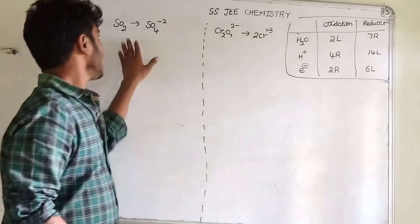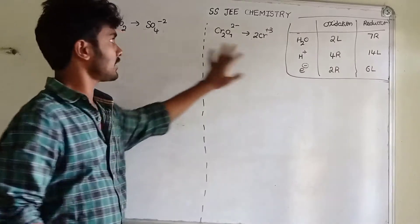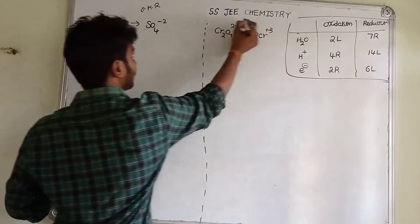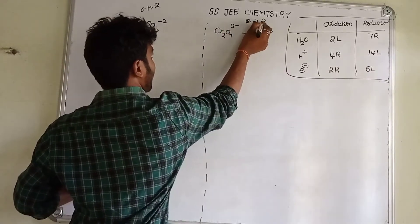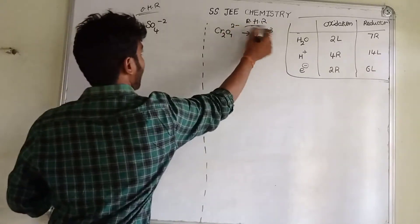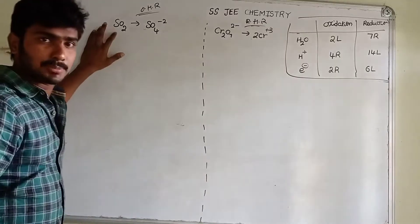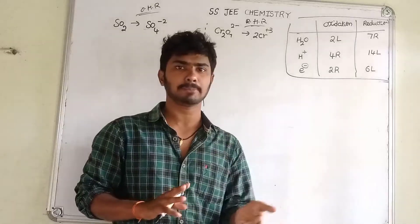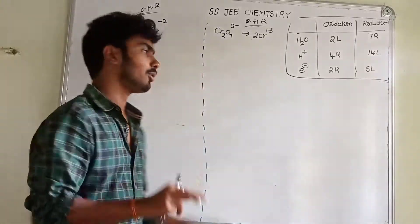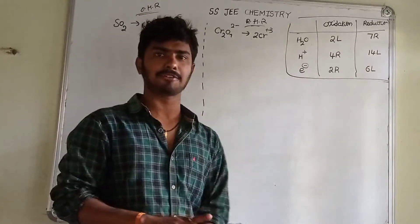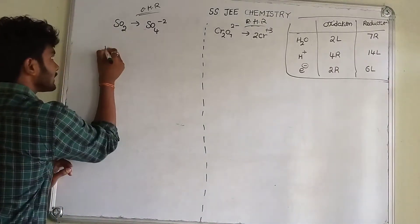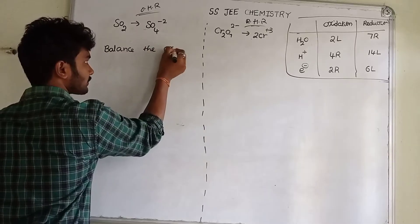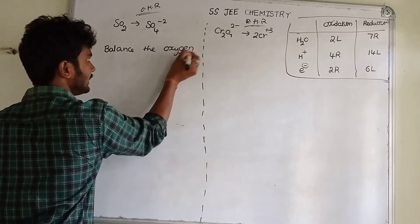Atoms balance — we have equations. Oxidation half-reaction, reduction half-reaction. So oxidation half-reaction, reduction half-reaction. Oxidation balance. Balance the oxygen atoms — balance the oxygen atoms.